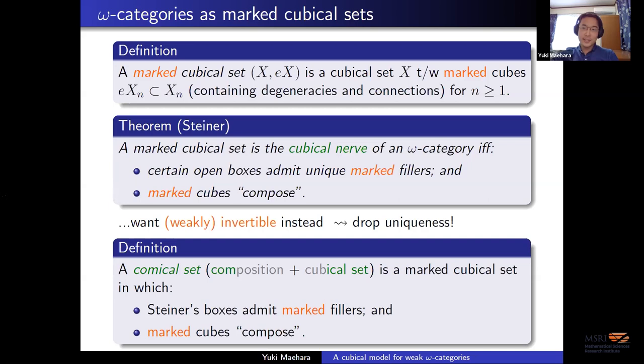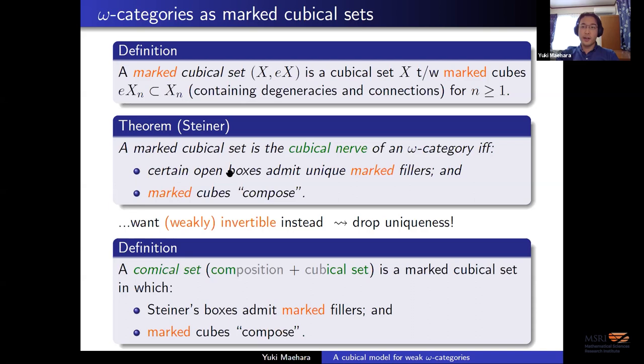Since these compositions are now witnessed by invertible things rather than identities, it doesn't make sense to ask for unique fillers. So we just drop uniqueness. Here is the definition of a model of weak omega category. A comical set — Chris named them, so obviously 'comical sets', the justification being it comes from 'composition cubical set' — is a marked cubical set in which the boxes that Steiner used admit marked fillers, and these marked cubes compose in the same way.